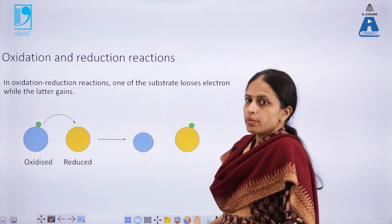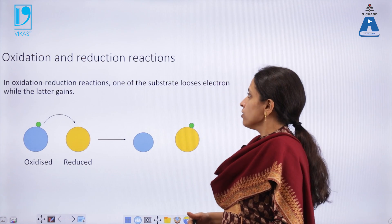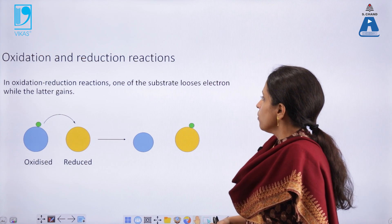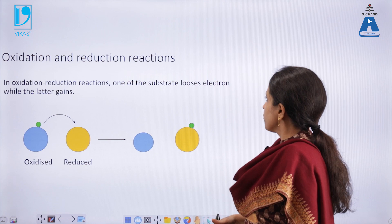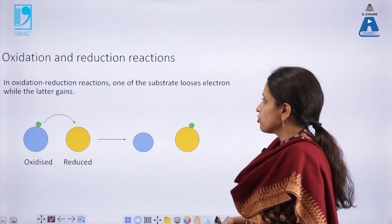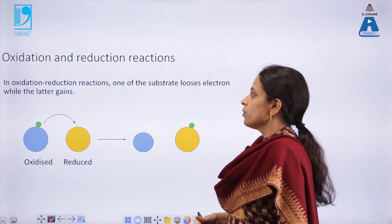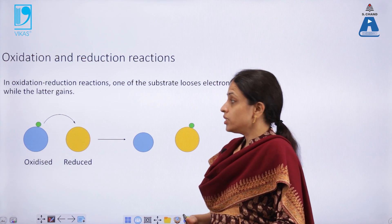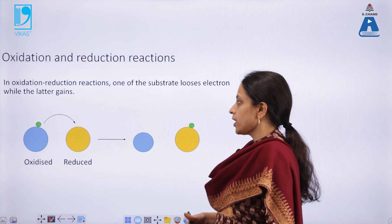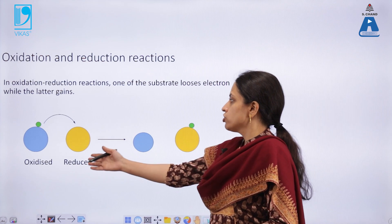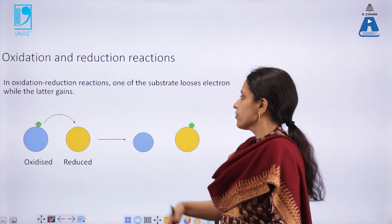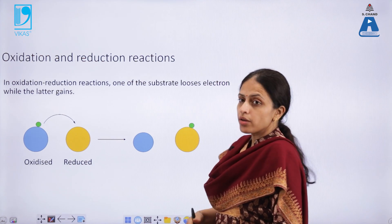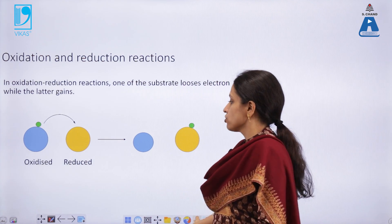In oxidation and reduction reactions, one substrate loses electrons while the other gains them. The one which loses electrons is getting oxidized, and the other one which gains electrons is getting reduced, forming the product of the reaction.